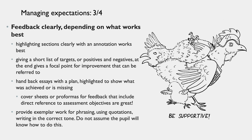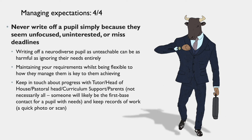Feedback clearly, depending on what works best. Highlighting sections clearly with an annotation works very well, or giving a short list of targets, positives, and negatives at the end to give a focal point for improvement. Handing back essays with a plan highlighted to what was achieved or is missing is very direct, and cover sheets or pro formas for feedback with direct reference to assessment objectives are really good. Providing exemplar work for phrasing, using quotations, and writing in the correct tone is extremely helpful. Never write off a pupil simply because they seem unfocused, uninterested, or have missed deadlines. Maintaining your requirements whilst also being flexible is the key to them achieving in your class. Keeping in touch about their progress with their tutor, pastoral head, or curriculum support, and keeping records of their work, is really helpful and will help you monitor their progress.